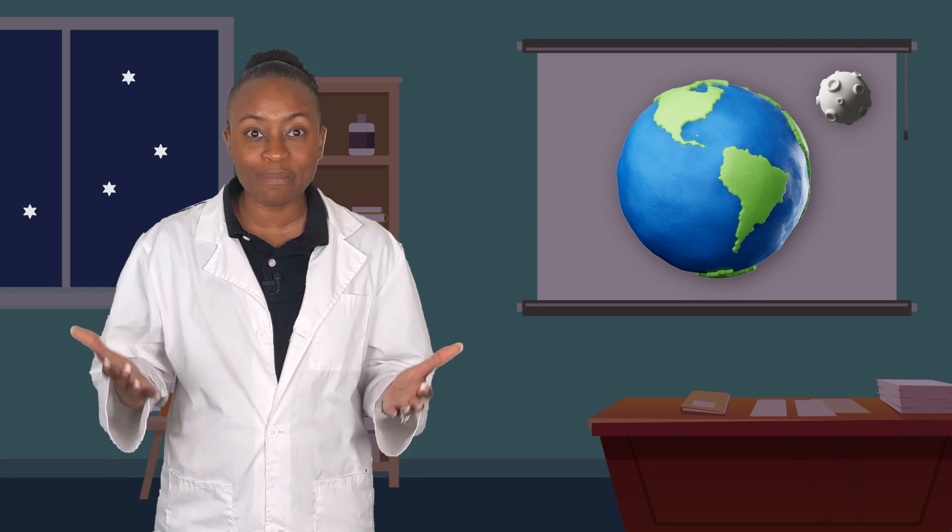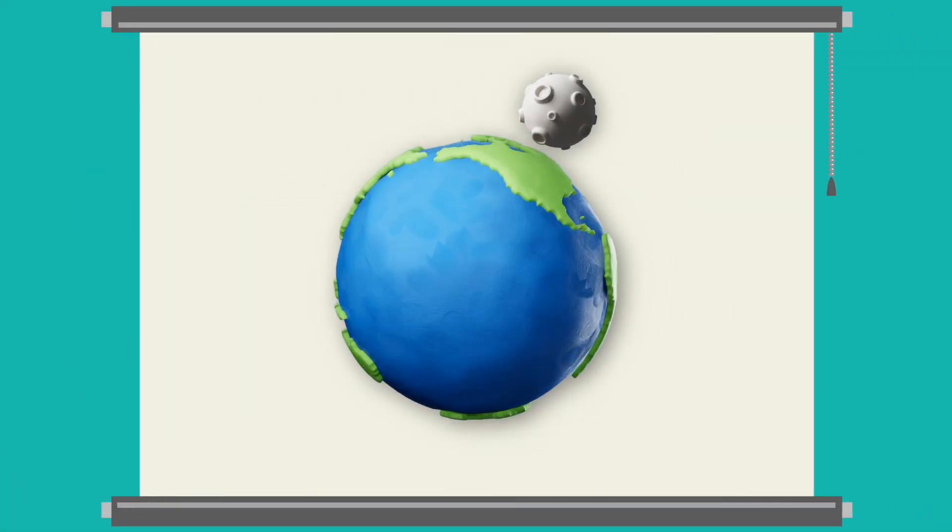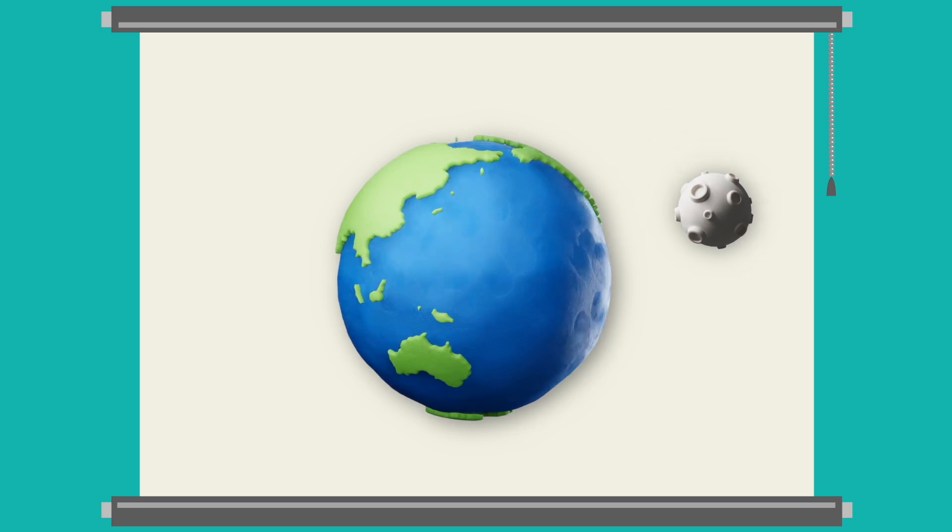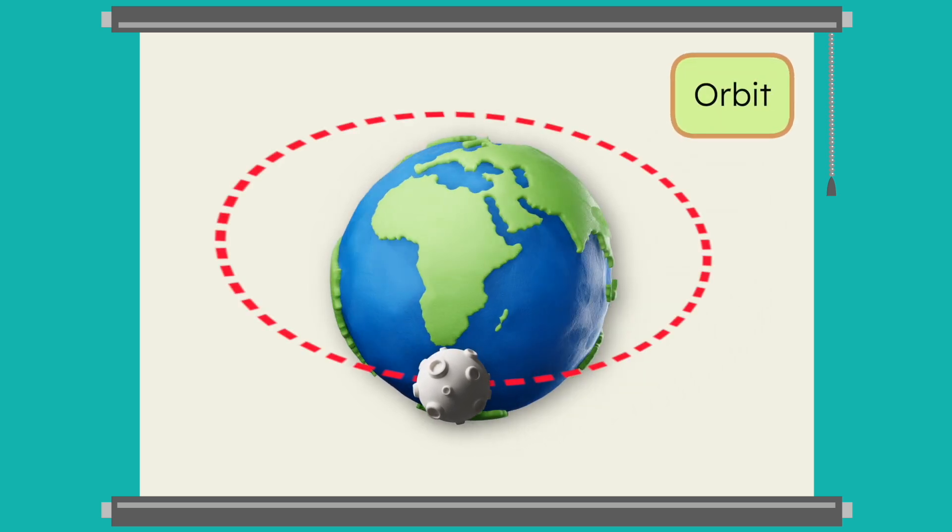And unlike the sun, the moon is actually moving. The moon travels slowly all the time in a path around the earth called its orbit. It looks like this. It takes the moon about one month to move all the way around the earth. So that's why we see the moon in a different spot each night. It's moving around the earth.